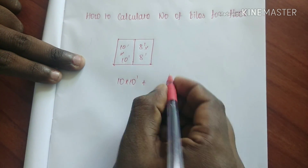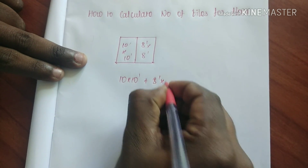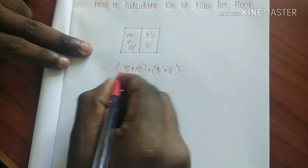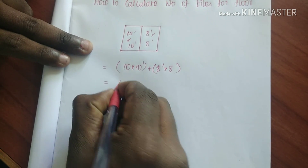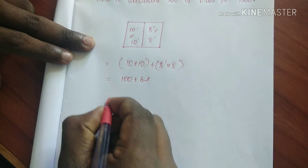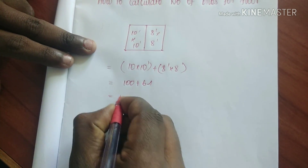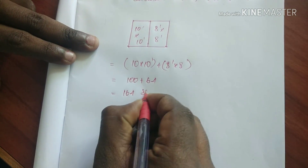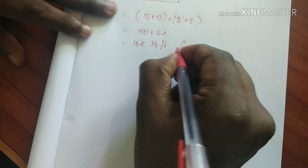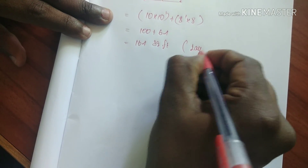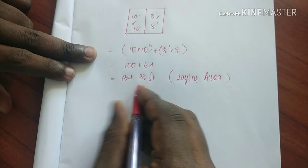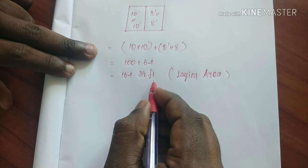Like 8 by 5, that gives us 64 square feet. This is 64 square feet. The total tile laying area is 164 square feet.